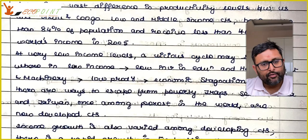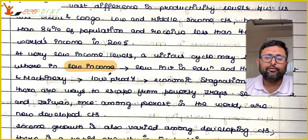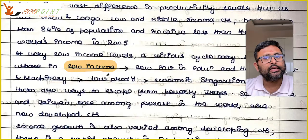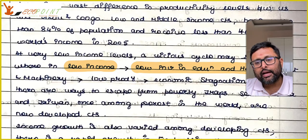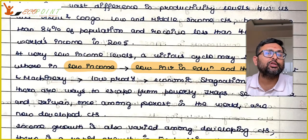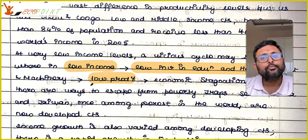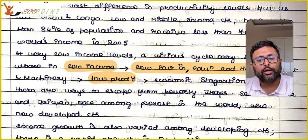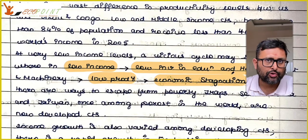When I say vicious cycle, I mean they already have low income. If they have low income, they will not have much to invest in education or in health. If they are not investing in education and health, naturally their productivity is going to be lower. If their productivity is lower, they will not have much growth.